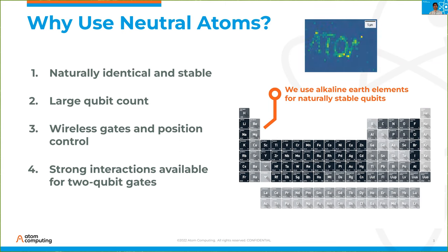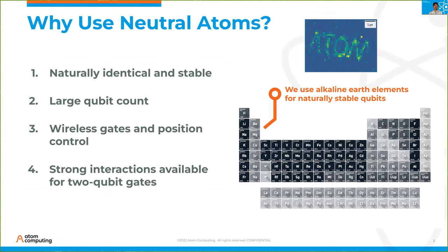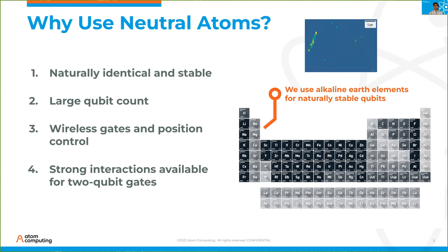Reason number two is that it's very easy to achieve large qubit counts, at least by today's standards. Looking at the literature, it's relatively straightforward for groups to work with tens to hundreds of neutral atom qubits in ways totally consistent with quantum computation. Reason number three, we can do wireless gates and wireless position control. Wireless gates are nice when you scale up your architecture because you don't have to worry about cabling issues, and position control lets you change your connectivity diagram on the fly, potentially improving gate compilation for your quantum circuit.